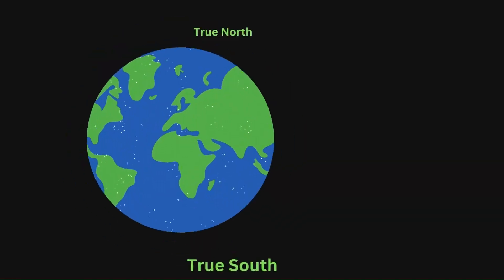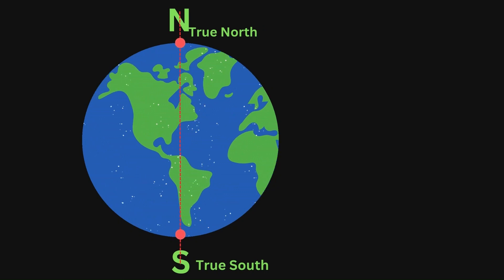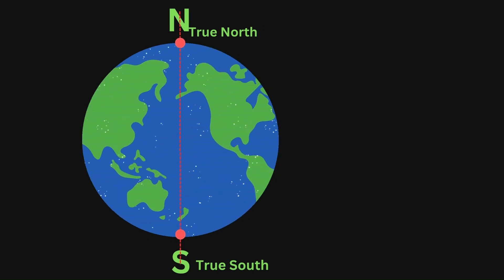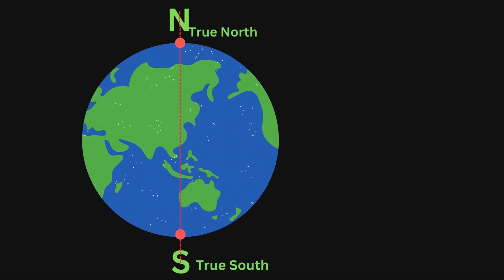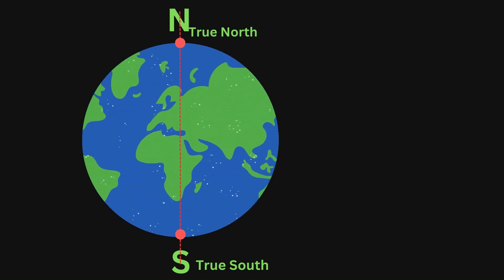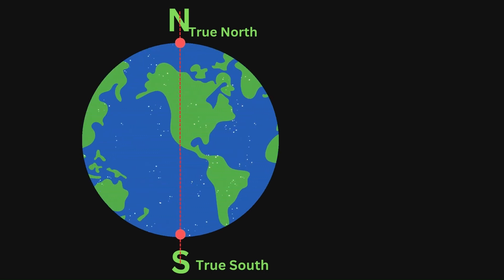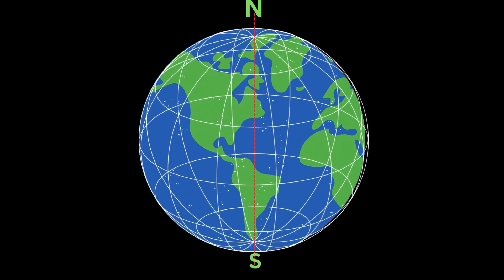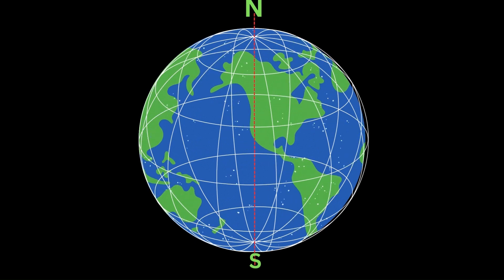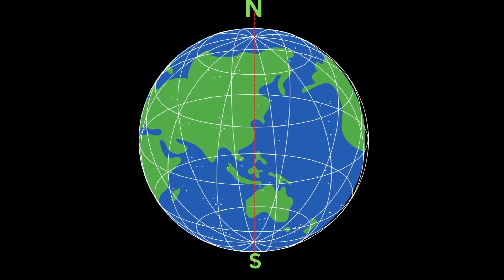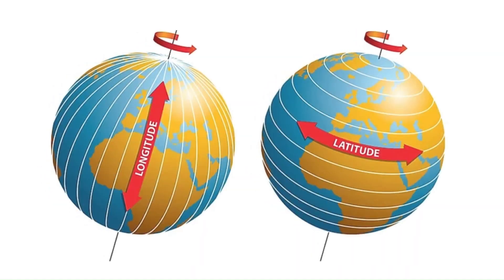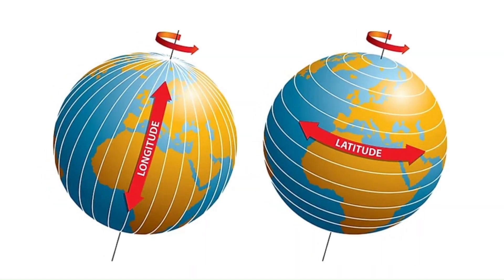The earth rotates around an axis that connects the north and the south poles. These poles are widely recognized as true north or the geographical north, as well as the true south or the geographical south. In the field of geography, we utilize a system of imaginary lines to define and understand different regions on earth's surface. These lines include latitude, which extends horizontally from west to east, and longitudes, also called meridians, which extend vertically from the north pole to the south pole.